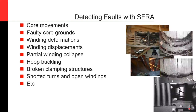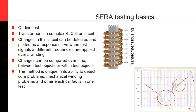SFRA is a piece of the puzzle, but it's nice because you can see a lot of information with sweep frequency response analysis. You can see core movements, faulty core grounds, winding deformations, winding displacements, winding collapse and hoop buckling — all these different things that will appear as differences in traces when looking at SFRA results. So it's one piece of equipment that gives you a variety of information about the health of your transformer.